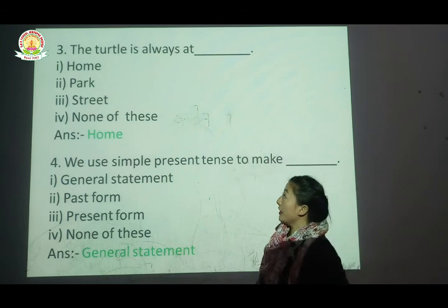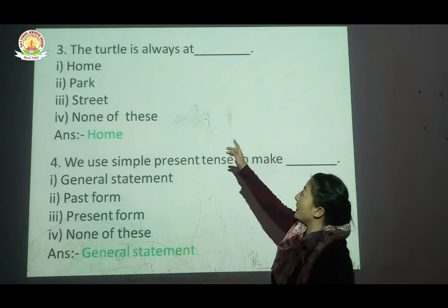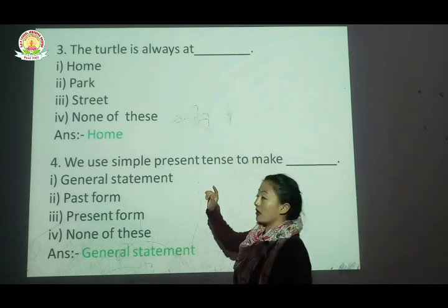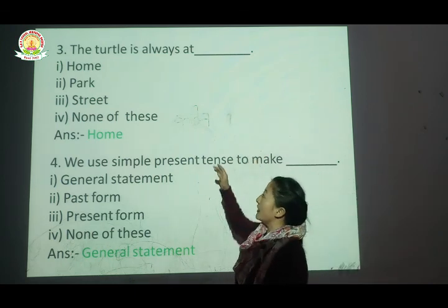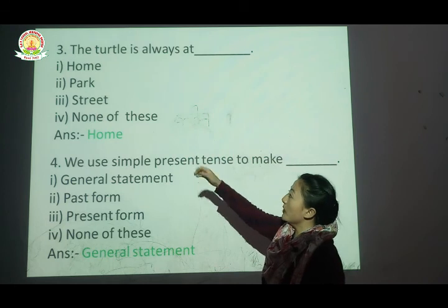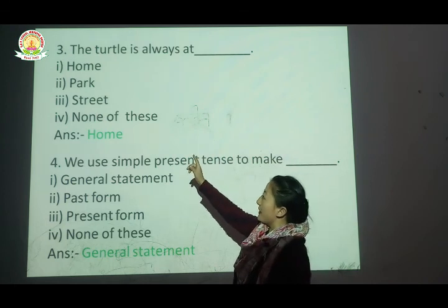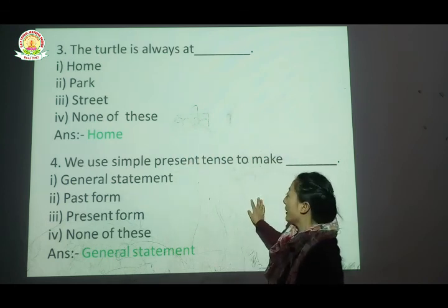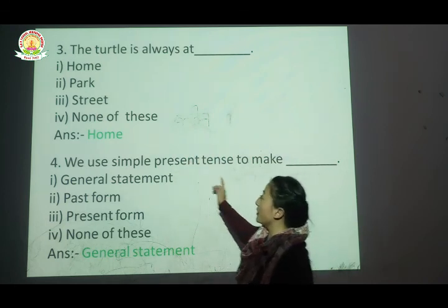Question number three: The turtle is always at blank. Options are: home, park, street, or none of these. The correct answer is home — the turtle is always at home.